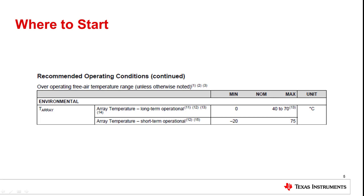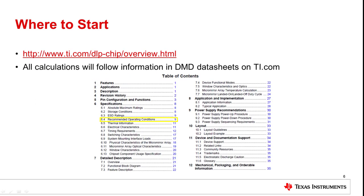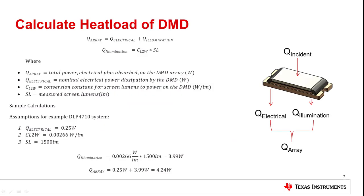The first section of the data sheet we will be looking at is the Recommended Operating Conditions section. This section lists the maximum and minimum operating temperatures of the DMD array. For this specific example, the DLP 4710 device has an operating temperature range shown in this slide. This information can be found in section 6.4 of the data sheet, titled Recommended Operating Conditions. The array temperature is the variable we are trying to determine to ensure the maximum temperature of the device is not exceeding recommended operating temperatures. The following slides will go through step by step to calculate the array temperature.